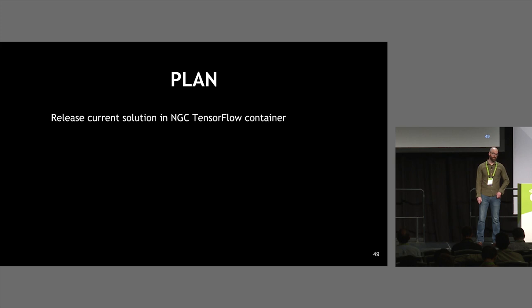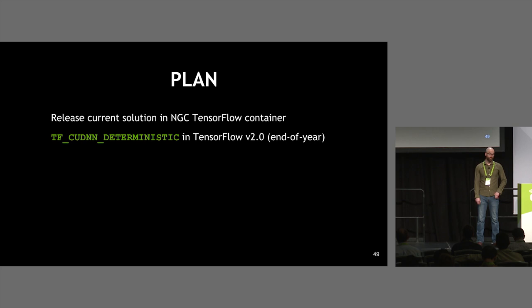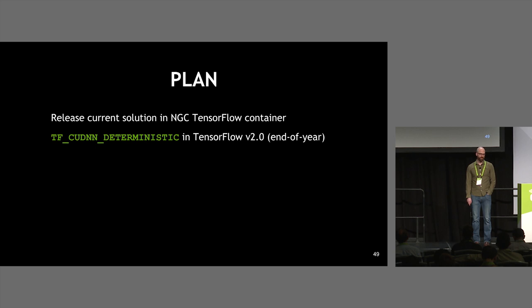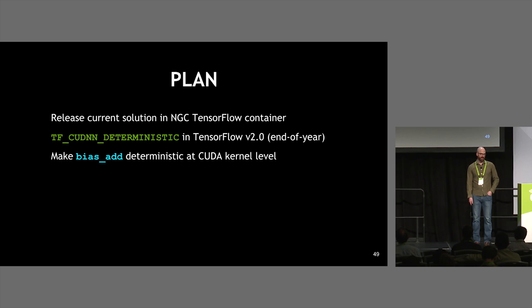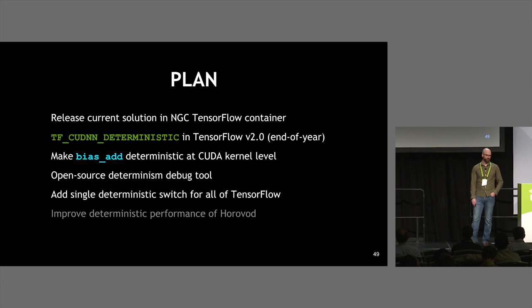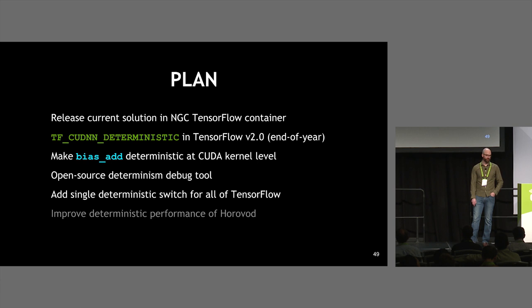The plan going forward: release the current solution in the NGC TensorFlow container so it's available to customers as soon as possible. The TF_CUDNN_DETERMINISTIC switch will be released in TensorFlow 2.0, expected end of year with release candidates in spring, and there's currently an alpha version. I want to make the bias add op deterministic at the CUDA kernel level for high performance. I'm announcing right now that we're going to open source the determinism debug tool. I also want to add a single switch to make all of TensorFlow deterministic, and work with the Horovod team to make it high-performant and deterministic.